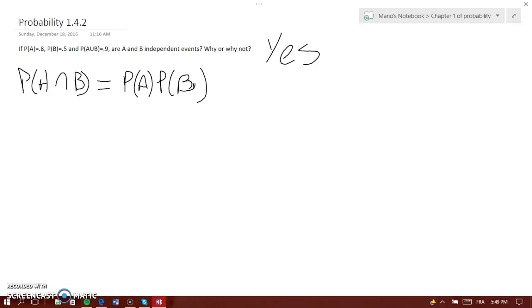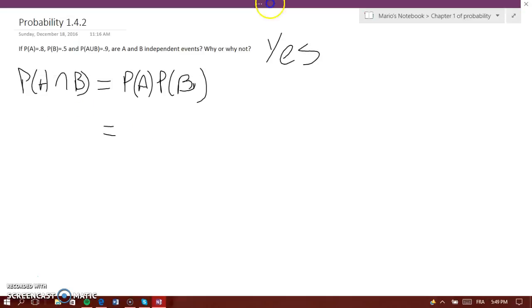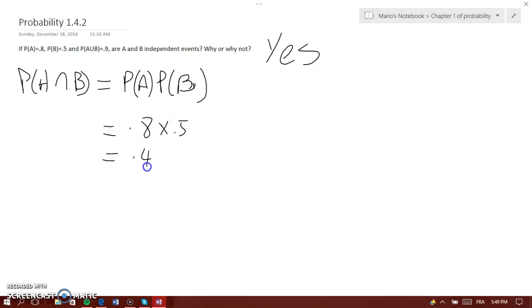Not only that, but I will tell you later another one. So P(A) times P(B) equals 0.8 times 0.5, which equals 0.4.